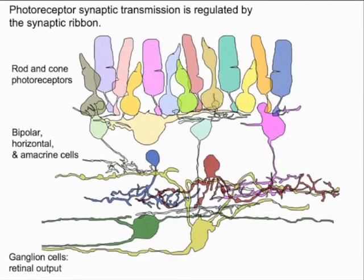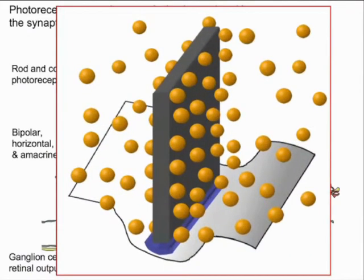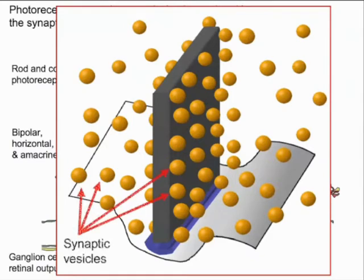At the first synapse in the visual pathway, rod and cone photoreceptors release the neurotransmitter glutamate onto postsynaptic horizontal and bipolar cells. This process is regulated by a proteinaceous structure called the synaptic ribbon, which is located within the photoreceptor terminal. It sits above the presynaptic membrane and tethers synaptic vesicles, readying them for exocytosis.